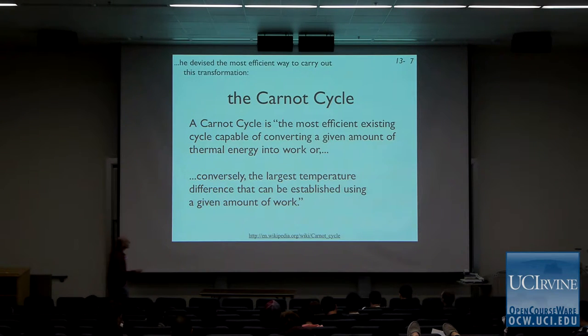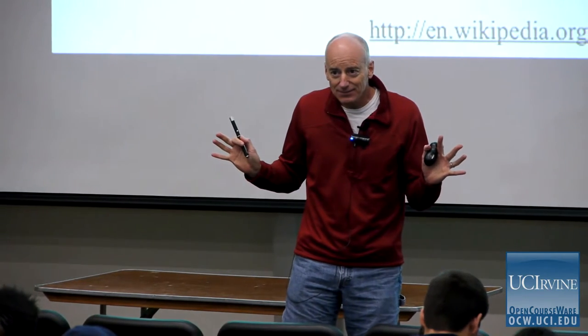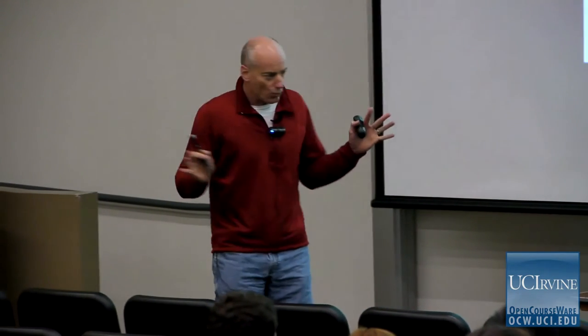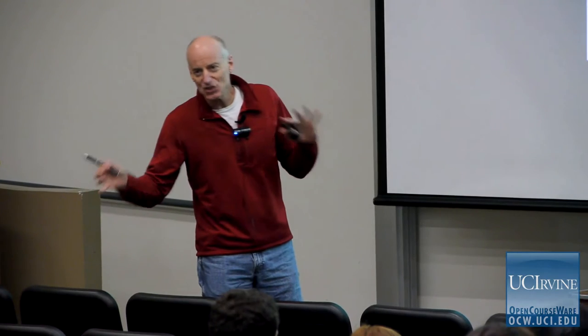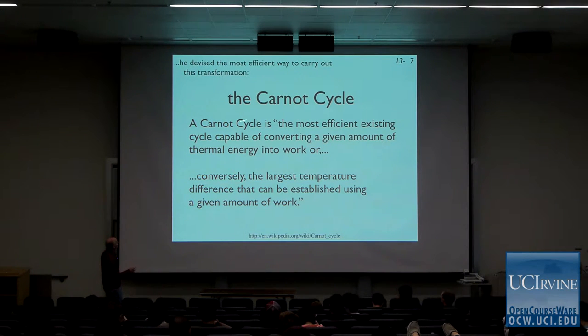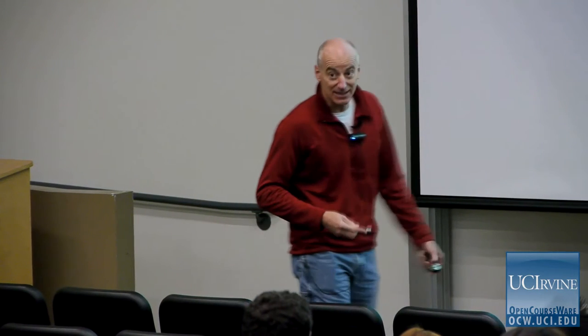Carnot derived this thing called the Carnot cycle. It turns out he didn't really talk about entropy in his writings — he never used the word entropy. It actually took a second guy to sort through everything he had done and reformulate it in a way that's useful to us in terms of what we now call the second law of thermodynamics. He derived the Carnot cycle, which is the most efficient existing cycle capable of converting any given amount of thermal energy into work.